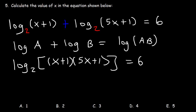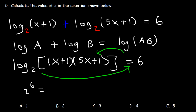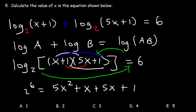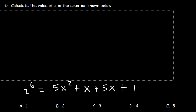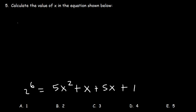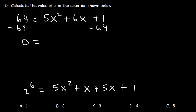Now let's convert this equation into its exponential form: two raised to the sixth power is equal to the stuff inside. Let's FOIL x plus one times five x plus one. x times five x is five x squared, then x times one is x, one times five x is five x, and one times one is one. Two to the sixth power equals 64. x plus five x is six x. Now let's subtract both sides by 64, so zero equals five x squared plus six x minus 63.